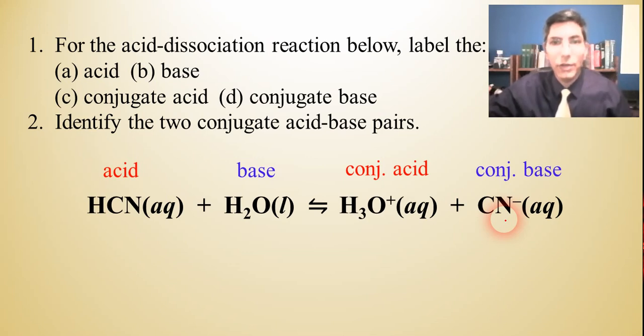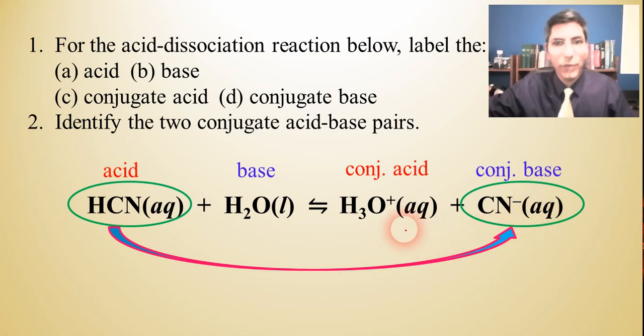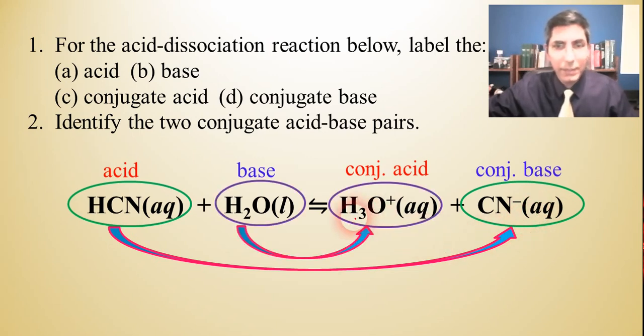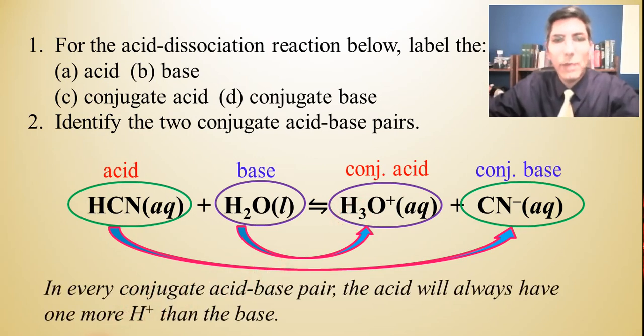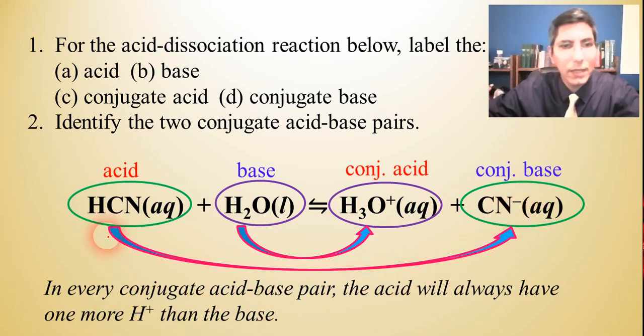Now, number two says, identify the two conjugate acid-base pairs. Once again, we just have to link up the acid with the conjugate base that looks like it. So we have that pair right there. And here's the other conjugate acid-base pair. Now, in case you're having trouble recognizing these, just remember that in every conjugate acid-base pair, the acid is always going to have one more proton, one more H+ than the base. And that's what we have here. There's the conjugate base. And the acid has an additional H+ tacked onto the front of it. Same thing with the base and the conjugate acid.